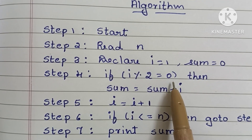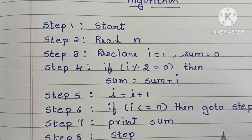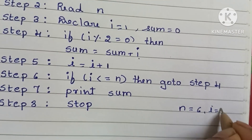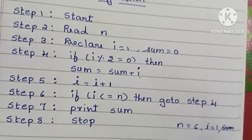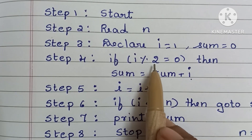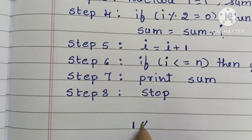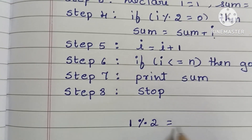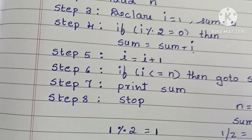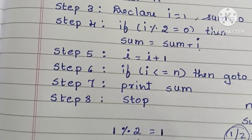Consider an example where N equals 6. Initially i equals 1 and sum equals 0. In step 4, we check i modulo 2: i is 1, so 1 modulo 2 equals 1. As you can see, 1 divided by 2 gives a remainder of 1, so 1 modulo 2 equals 1.